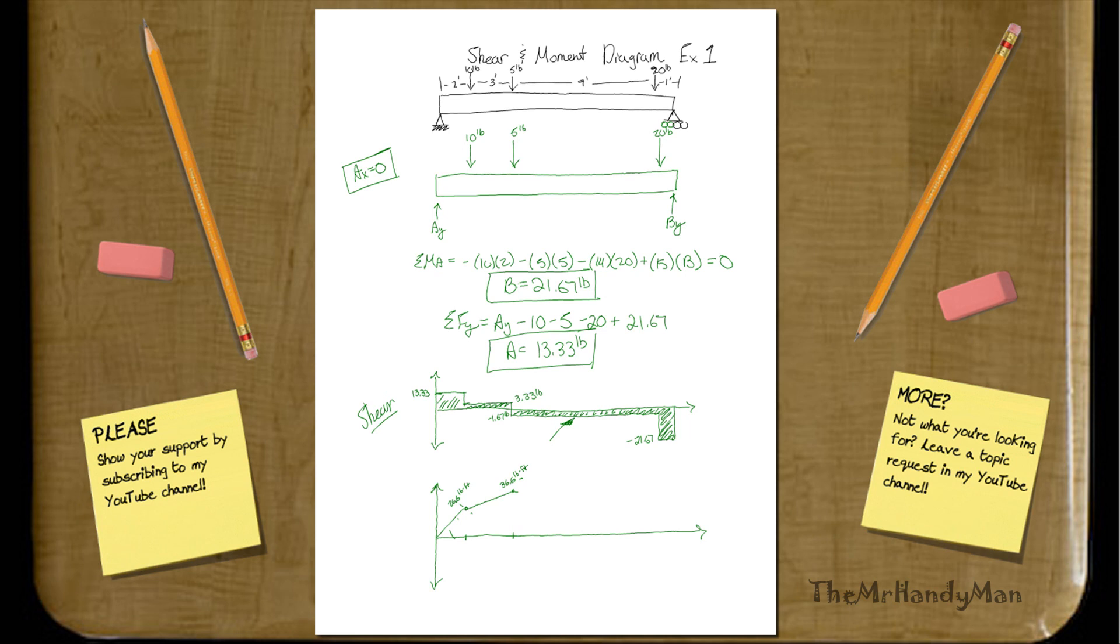It should be around 21, right? So it should be right around there. Something like that. More straight-like, obviously. 21.67 and then right on down to zero.